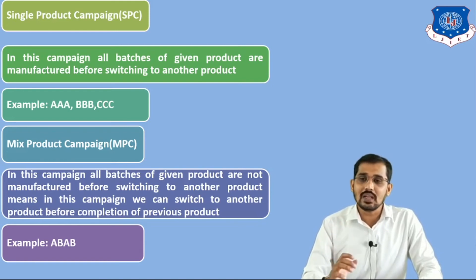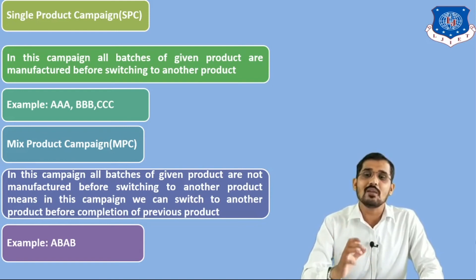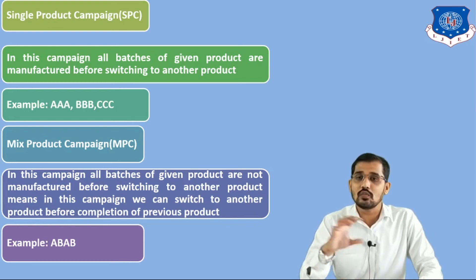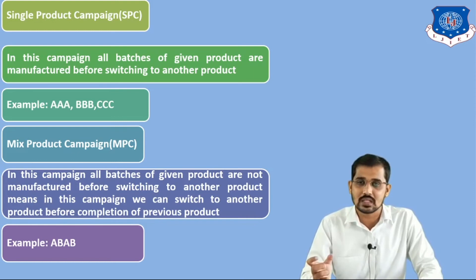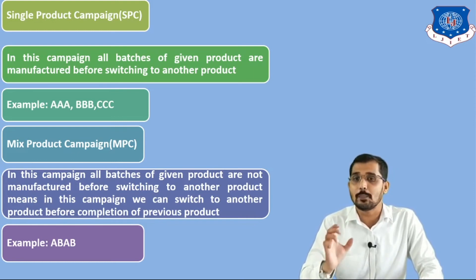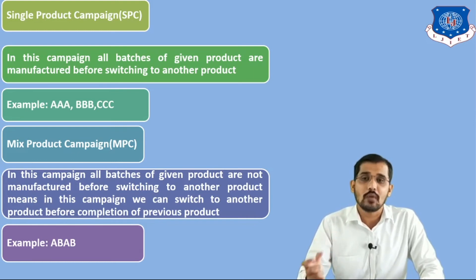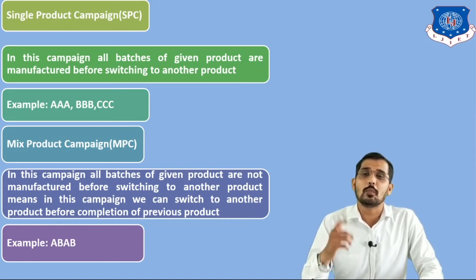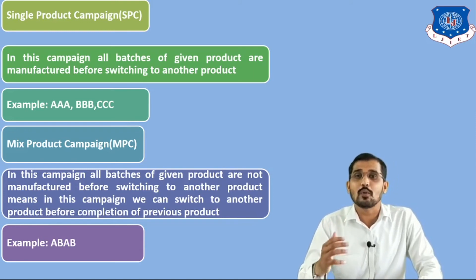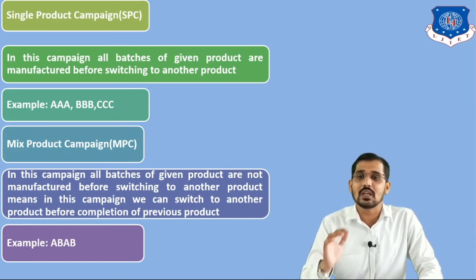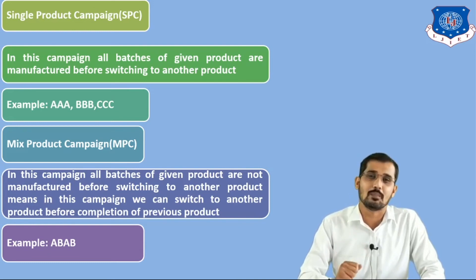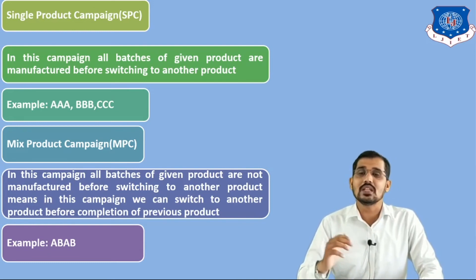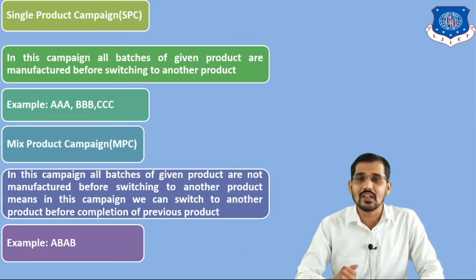In this manner we can describe single product campaign and mixed product campaign. The whole question related to multiple product batch plant can be asked for 7 marks, and questions related only to the flow shop plant can be asked for 5 marks, where we have to explain the flow shop plant and the product campaigns — SPC and MPC. SPC is nothing but single product campaign and MPC is nothing but mixed product campaign. This is all about this lecture; we will see the next topic in the next lecture. Thank you very much.